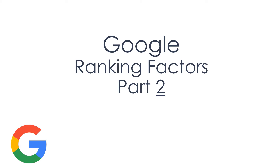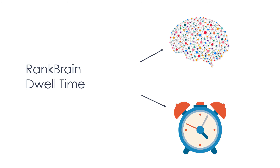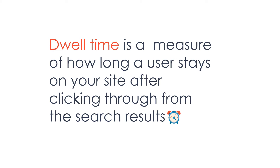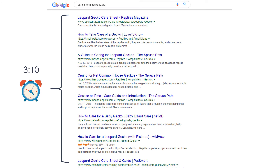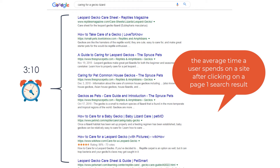So what are the signals that RankBrain uses to decide where a page or a post displays in the search results? Well, one of the things it uses is called dwell time. Dwell time is how long a user stays on your site after clicking through from the search results. We know that the average time is 3 minutes and 10 seconds.